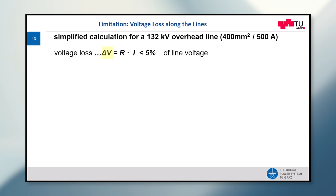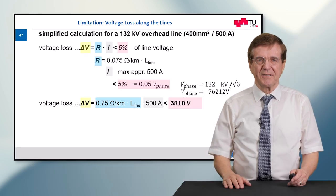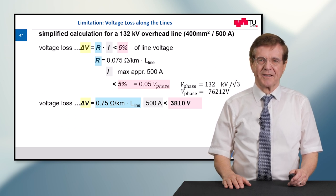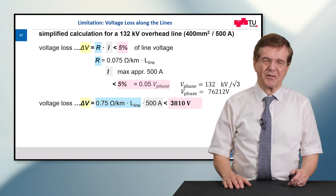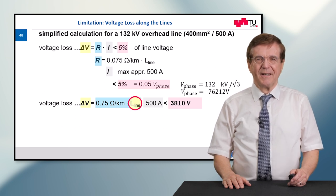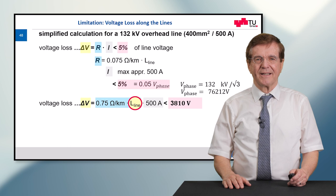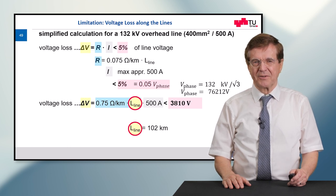So the voltage loss across a line should be limited. So for example, we do not want to lose more than five percent of the voltage seen from the input to the output to the end of the line. And therefore, this means we can calculate now with these figures. The resistance depends on the line length. You see at the right side there is L line. This is the line length. The current is somehow always, as you saw, like 500 amps. And this five percent of the phase voltage can be transferred into this voltage of no more than 3810 volts. Now we can from this equation determine the line length, and the line length here results in 102 kilometers.